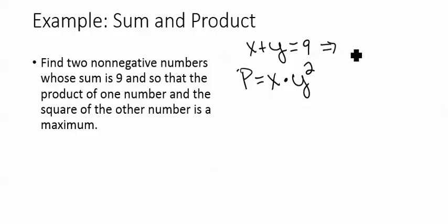So that original equation I could write as y equals 9 minus x. This way, my product is actually equal to x times 9 minus x squared.